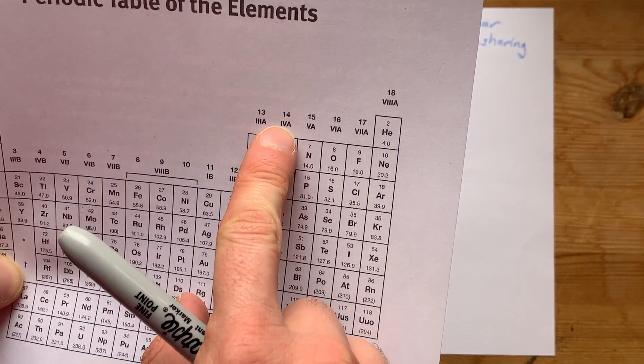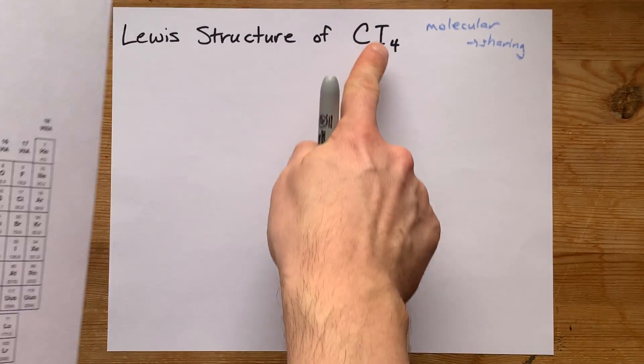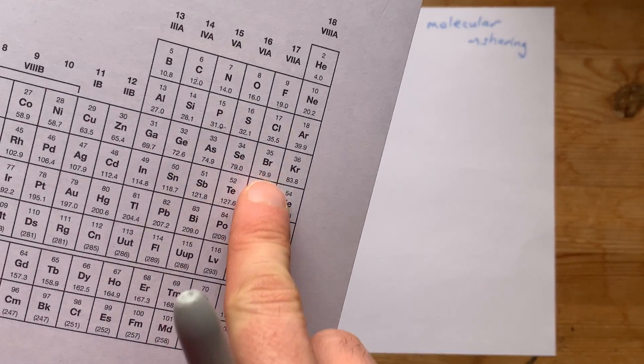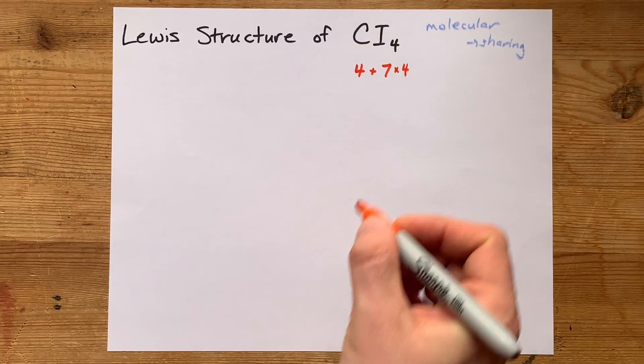Carbon is in group 14, so it brings four valence electrons. Iodine is in group 17. That's going to bring seven valence electrons, and there are four of them.